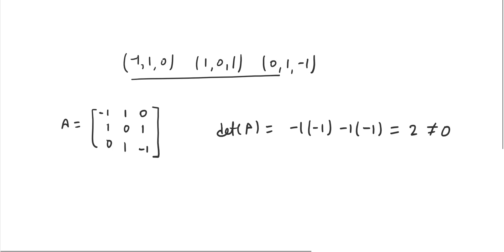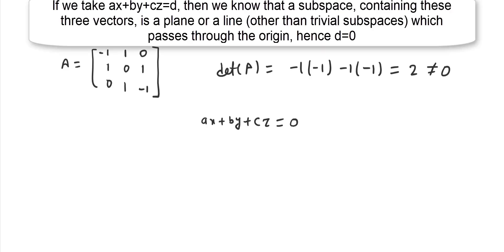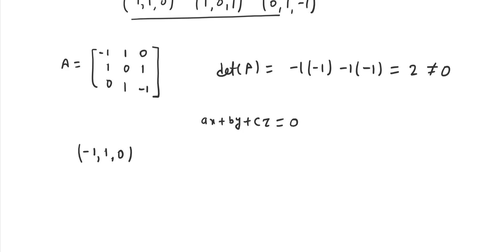Now let us see it geometrically using GeoGebra. Let us check if there is a plane which passes through these three vectors. Assume a plane Ax plus By plus Cz equals 0 which passes through these three vectors. Since the plane passes through vector minus 1, 1, 0, we get the equation minus A plus B equals 0.